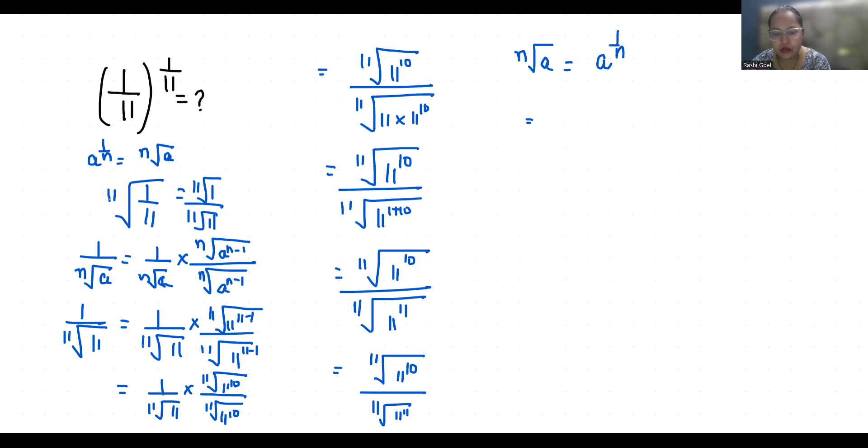So 11^10 by 11, 11^(10 × 1/11). According to the exponent rule,